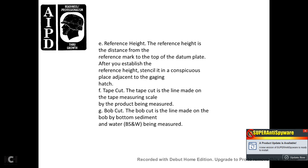6. Tape cut and bob cut. A tape cut is the line made on the tape measure or scale by the product being measured. A bob cut is the line made on the bob by the bottom sediment or water being measured.